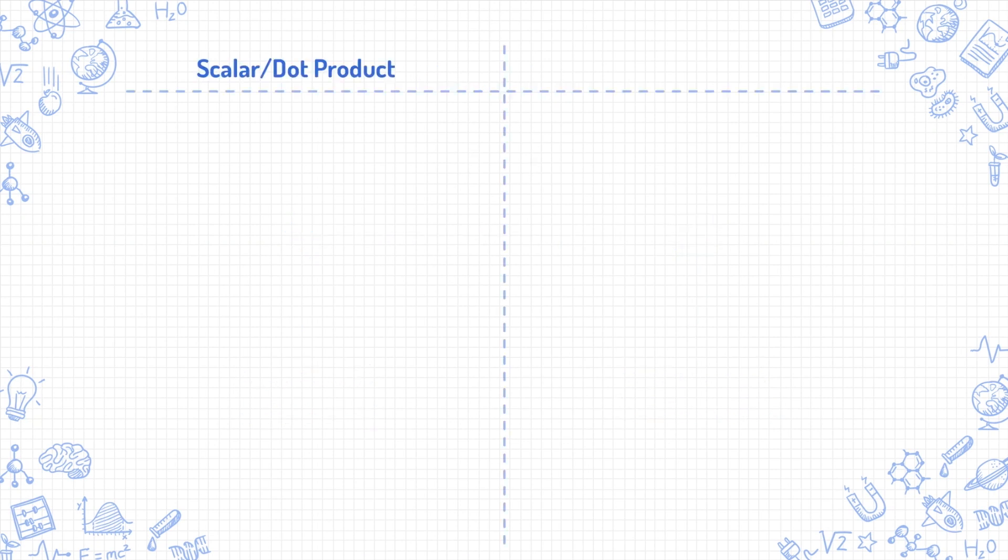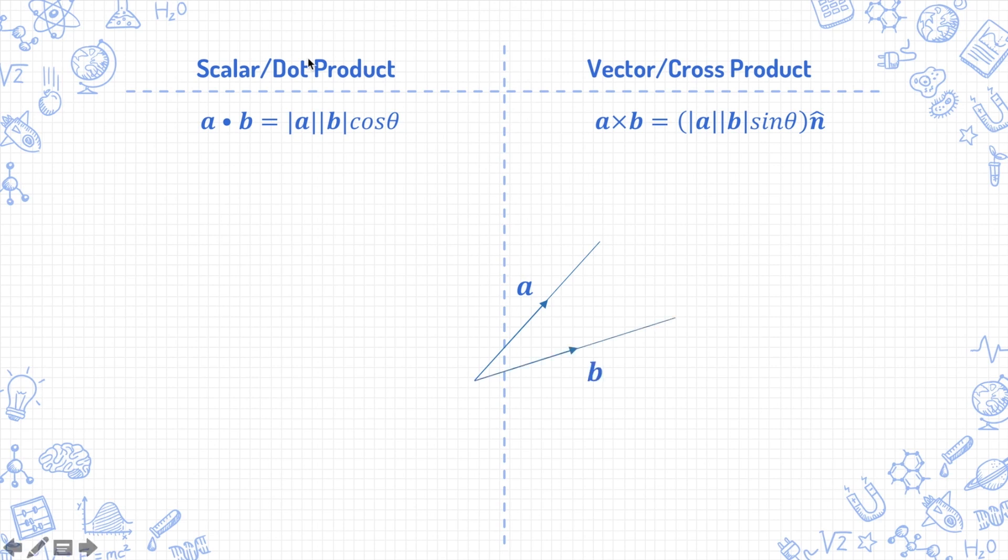The dot product is defined as a dot b equals mod a mod b cosine theta, and the cross product is defined as a cross b equals mod a mod b sine theta n cap. If this line represents the vector a, and this line represents the vector b, in each of these equations, a and b refer to the vectors themselves, and mod a and mod b refer to the magnitudes of vectors a and b respectively. Geometrically, mod a is the length of this line, and mod b is the length of this line. The theta here refers to the angle between the two vectors a and b.